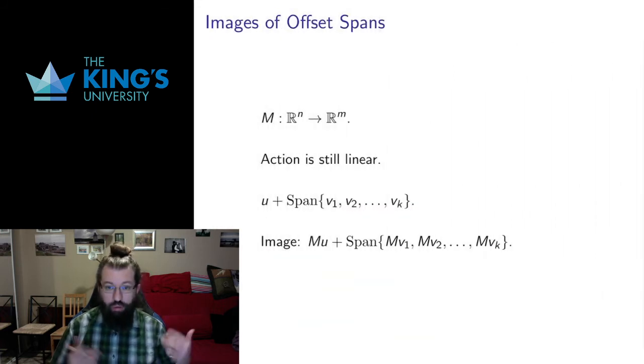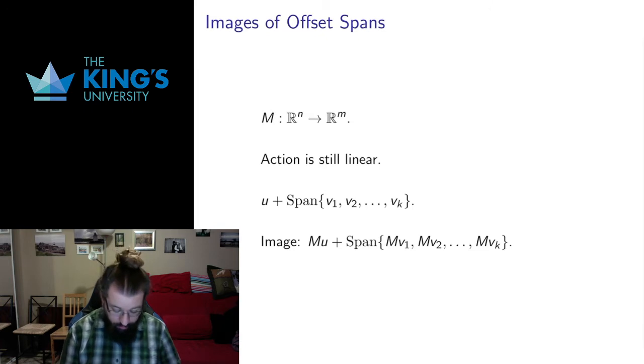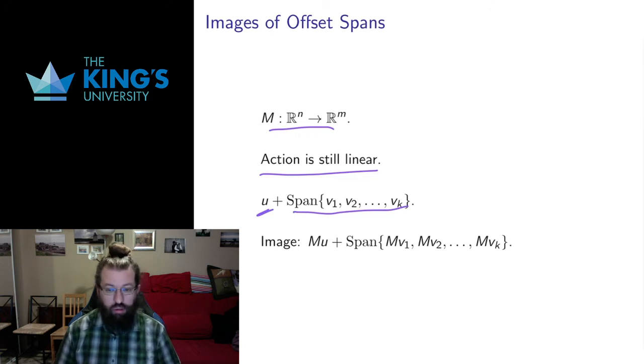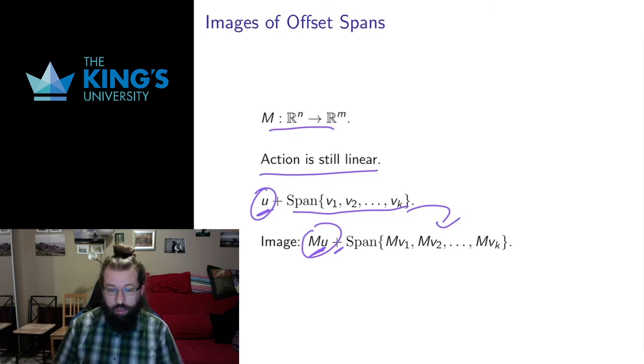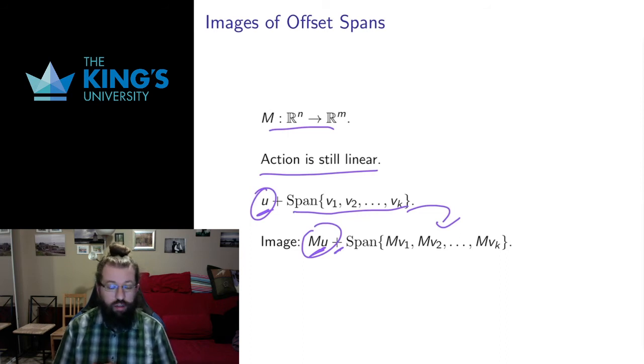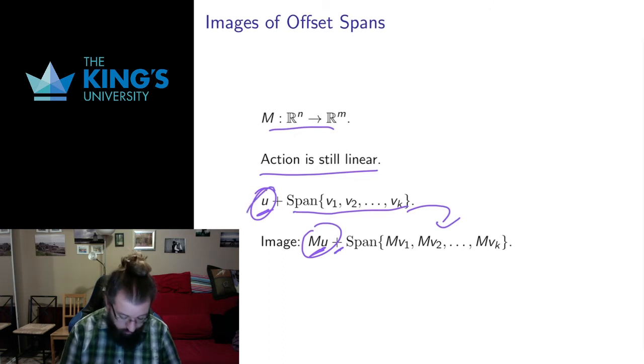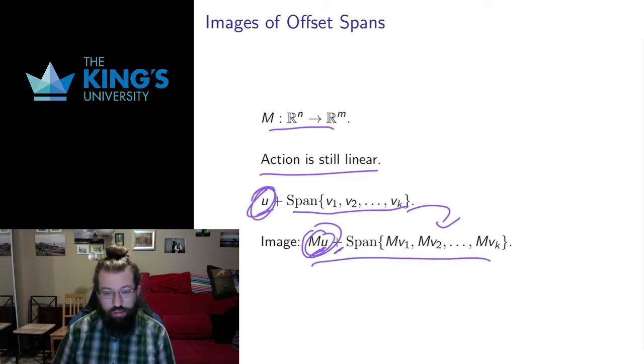And the same thing is true also for offset spans. So I have this transformation, the action is still linear, so an offset span is some span plus some other vector. Well I know the span goes to the span of the new vectors, and this plus the action is linear, so I can just do the action separately and then add them together. So it just goes to another offset span, and the new offset is the image of the old offset. And it might be a different offset, it might not be an offset at all. If M sends U to 0, it might now be an actual span through the origin. Whatever it is, wherever M sends this U, I get something that looks like an offset span again.